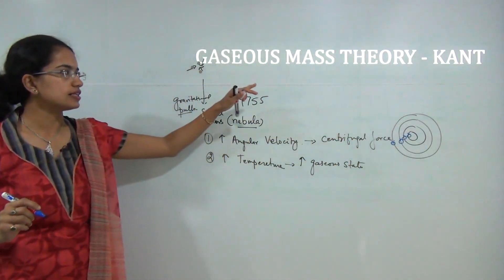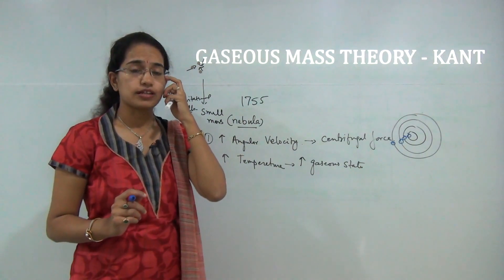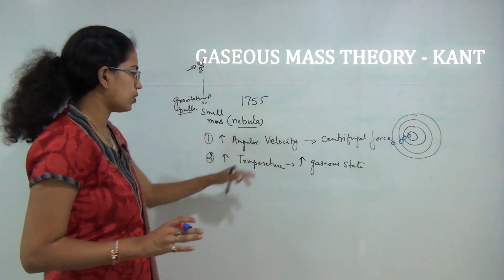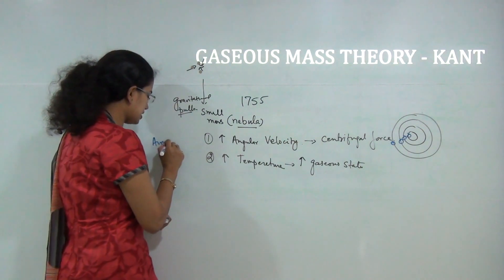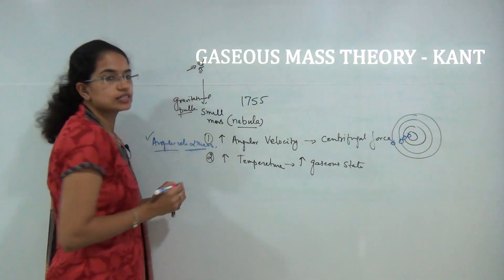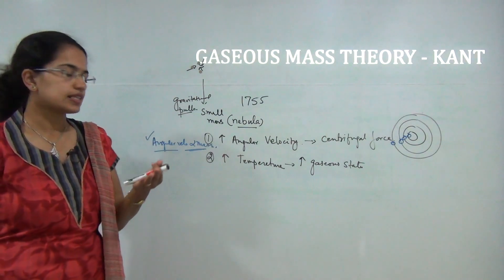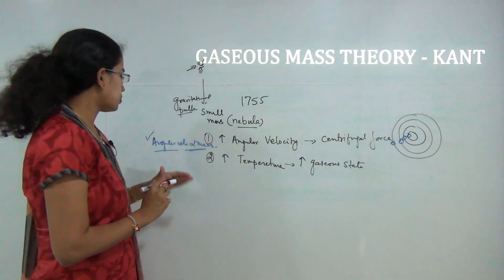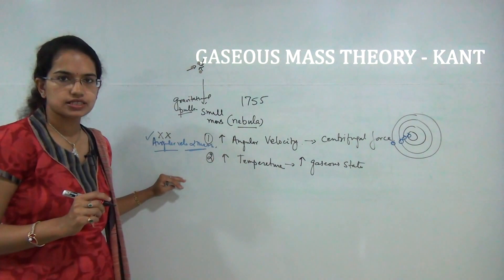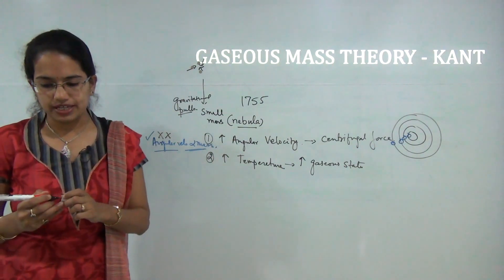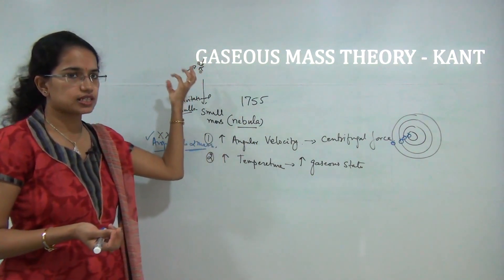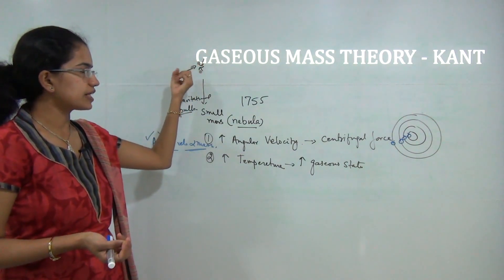That was what Kant tried to explain. His theory was among the simplest propounded. The major problem with his theory was that angular velocity is directly proportional to mass, but if that were true, the angular velocity of the planets would be less than that of the sun — and that is not true in the present day. This could not be proved under Kant's theory, and it also could not explain the origin of the gravitational force between the nebulae.